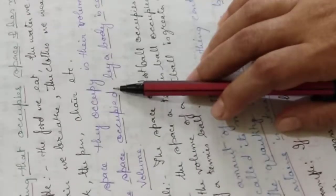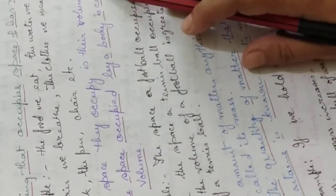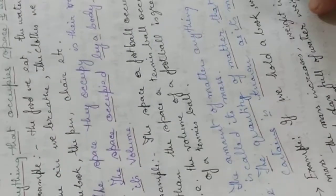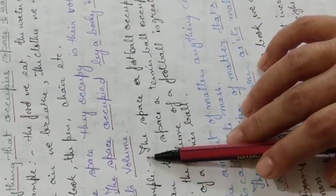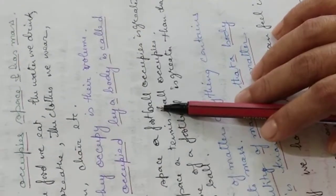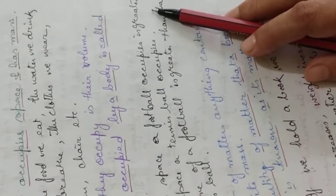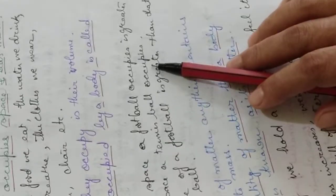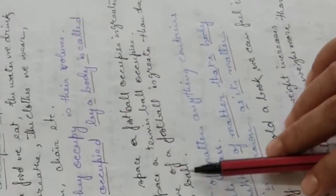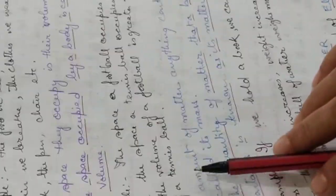The space they occupy is their volume. Therefore, the space occupied by a body is called its volume. For example, the space a football occupies is greater than the space of a tennis ball. Therefore, the volume of a football is greater than that of a tennis ball.